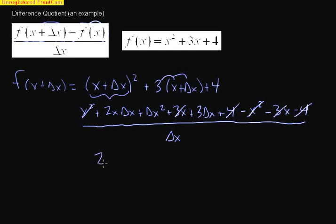What we have left is 2x delta x plus delta x squared plus 3 delta x, still all over delta x.